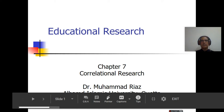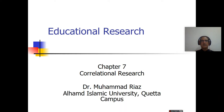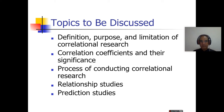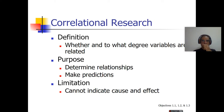This is a series of educational research. In this lecture, we will discuss about correlational research. The correlational research is actually a relation between two or more variables. We will discuss the definition of correlational research, purpose of correlational research, and limitation of correlational research.